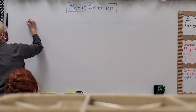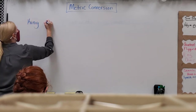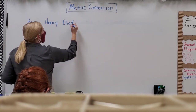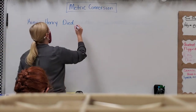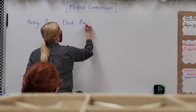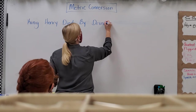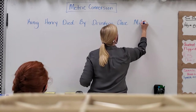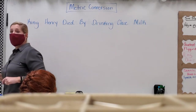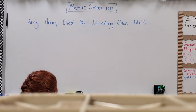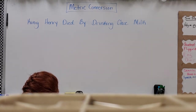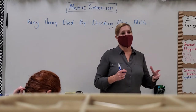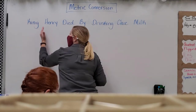Here's your shortcut mnemonic device: King Henry Died By Drinking Chocolate Milk. This is helpful as a mnemonic device to remember the order of the prefixes in the metric system. What I'm going to do is fill in below each first letter what that prefix stands for.